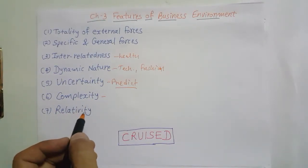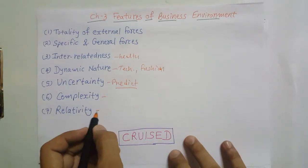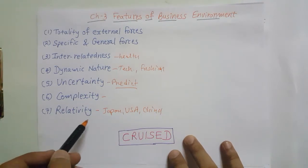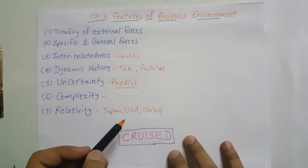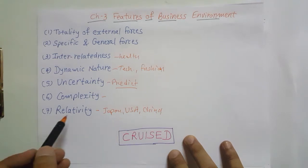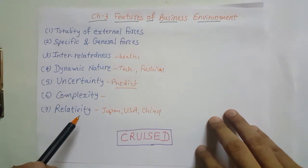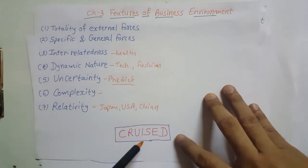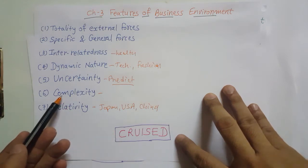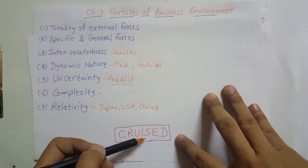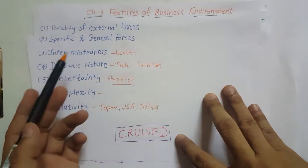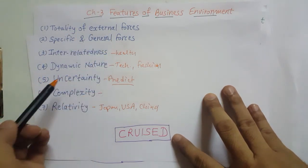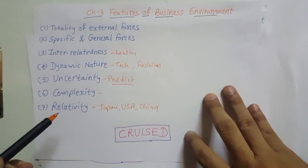The seventh feature is relative — business environment of every place is different. The business environment of Japan is different, USA is different, and China is different. Every region or area has a different business environment. To remember all these features, there is a mnemonic word: CRUISED — C for Complexity, R for Relativity, U for Uncertainty, I for Interrelatedness, S for Specific and General forces, E for totality of External forces, D for Dynamic in nature.